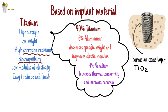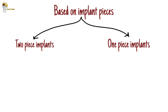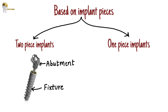Zirconium also osseointegrates with bone like titanium. Additional advantages of zirconium are high aesthetics and the ability to be used in patients with titanium allergy. On the basis of implant pieces, we have two-piece implants and one-piece implants. Most implants come with two pieces: the implant body or fixture, and the abutment screwed over it to support the prosthesis. The one-piece implant comes with the abutment attached, and is used for immediate functional or non-functional restoration after implant placement.